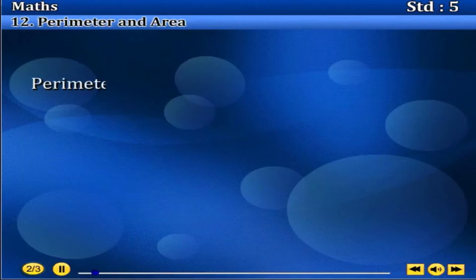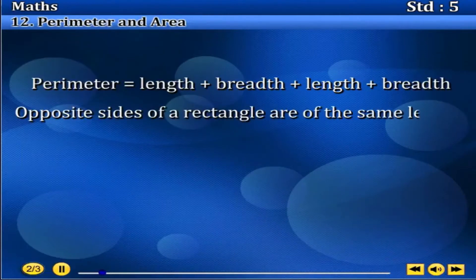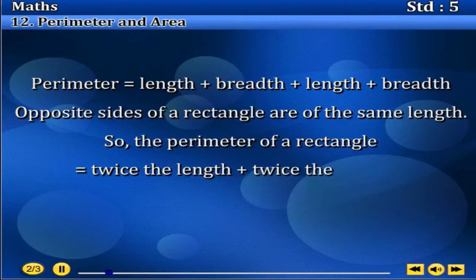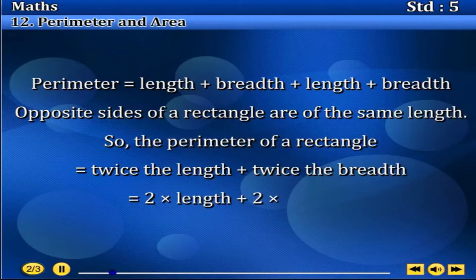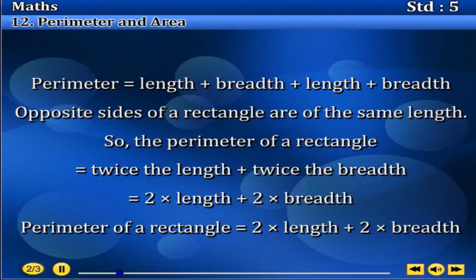Perimeter equals to length plus breadth plus length plus breadth. Opposite sides of a rectangle are of the same length. So, the perimeter of a rectangle equals to twice the length plus twice the breadth, equal to 2 into length plus 2 into breadth. Perimeter of a rectangle equals 2 into length plus 2 into breadth.